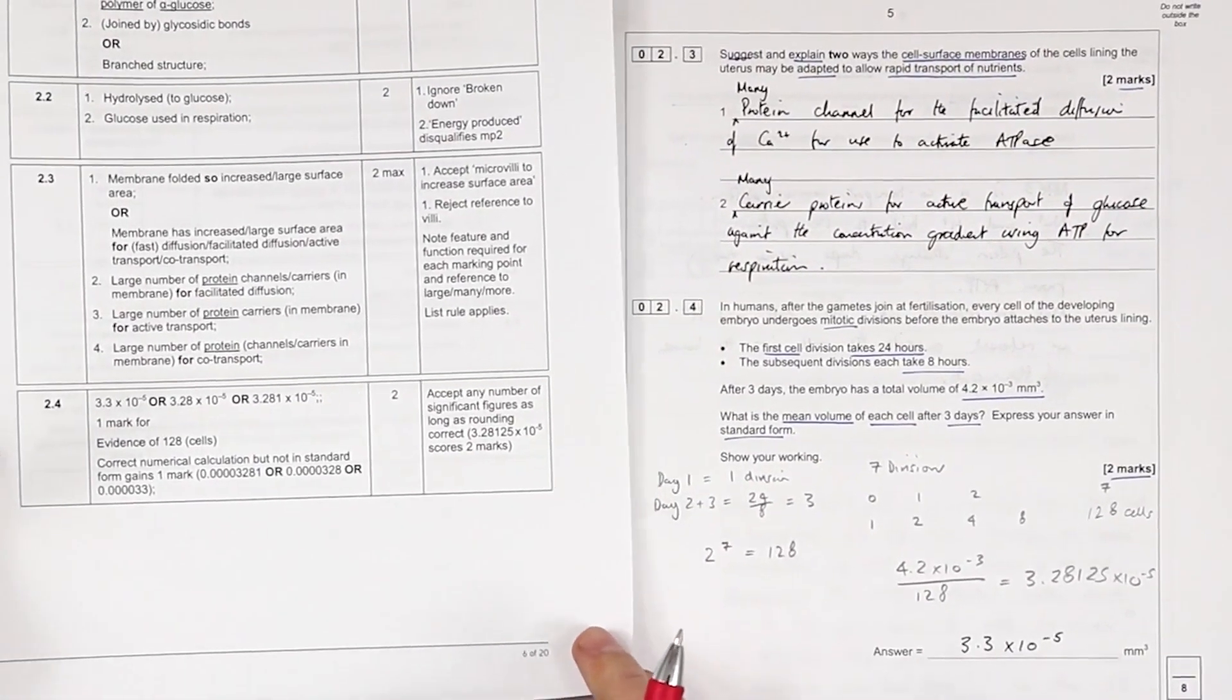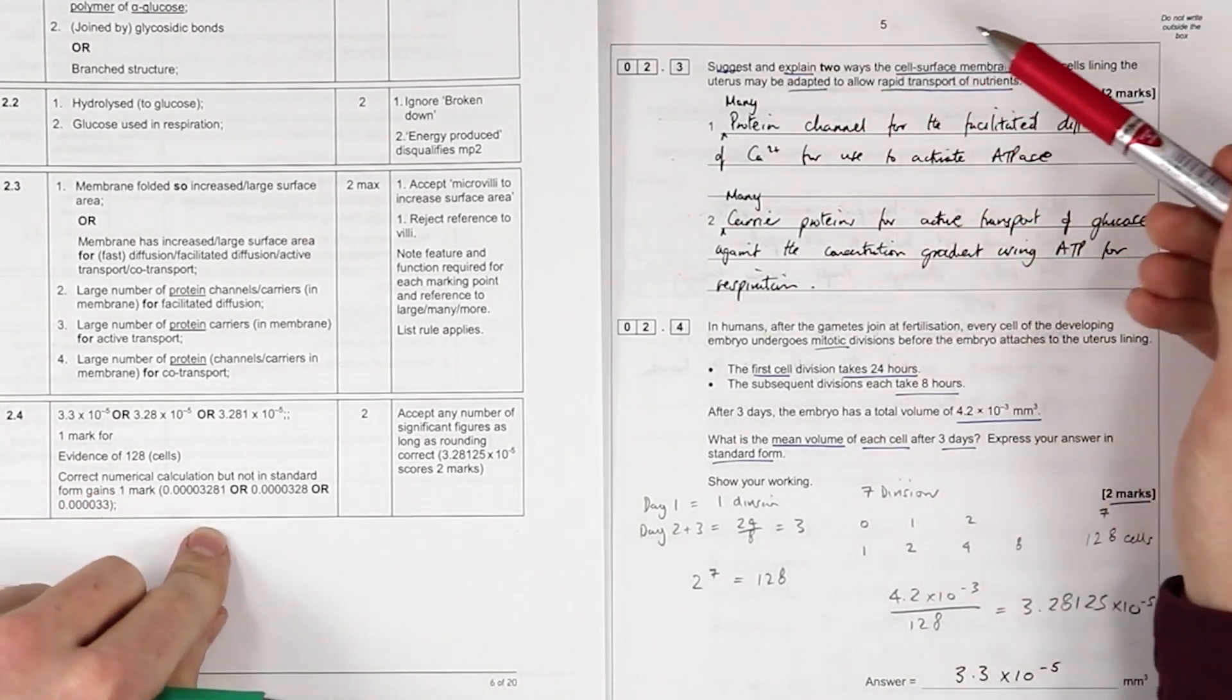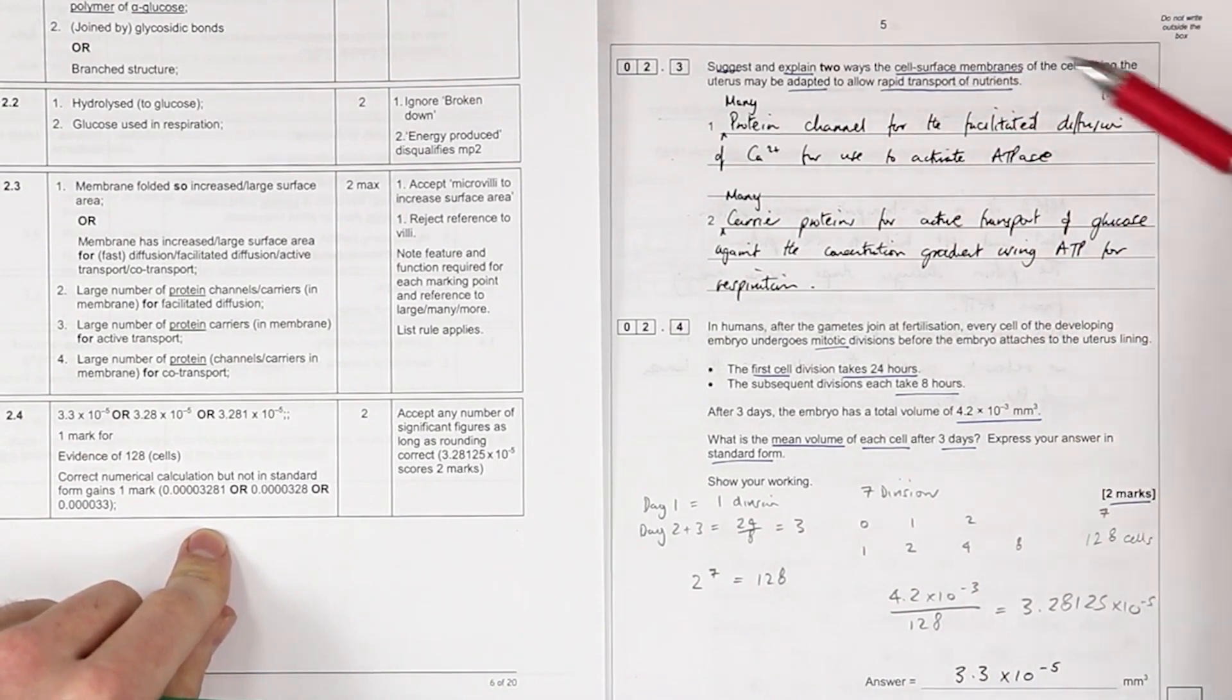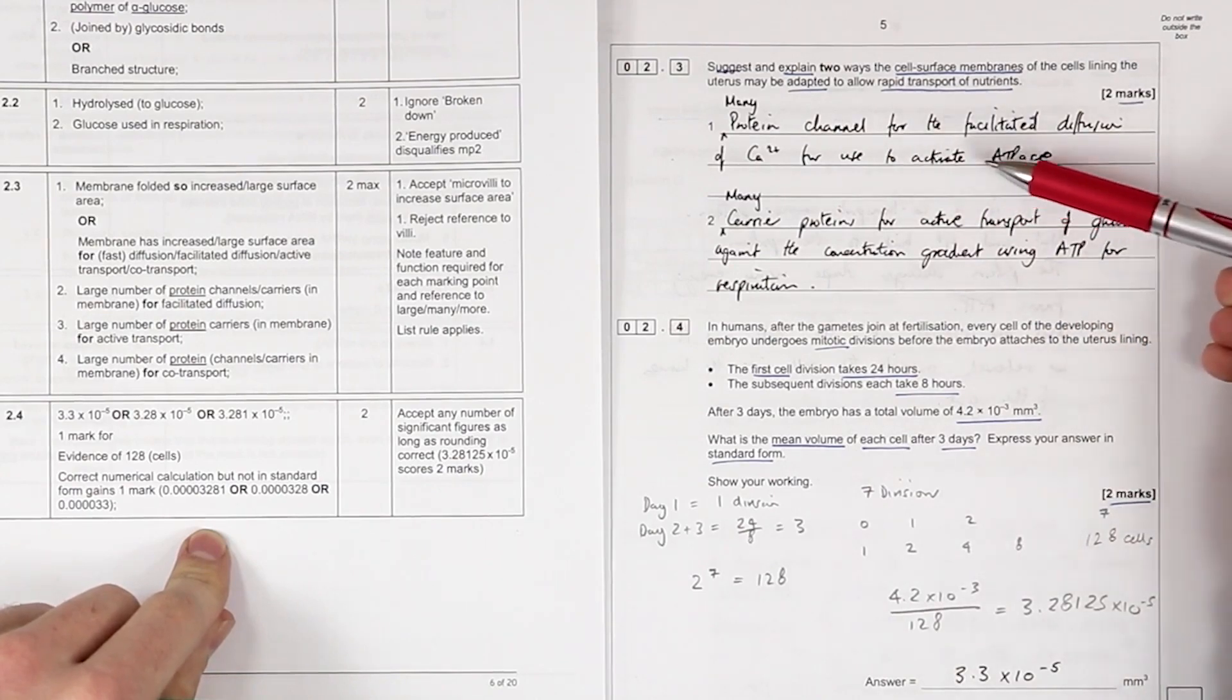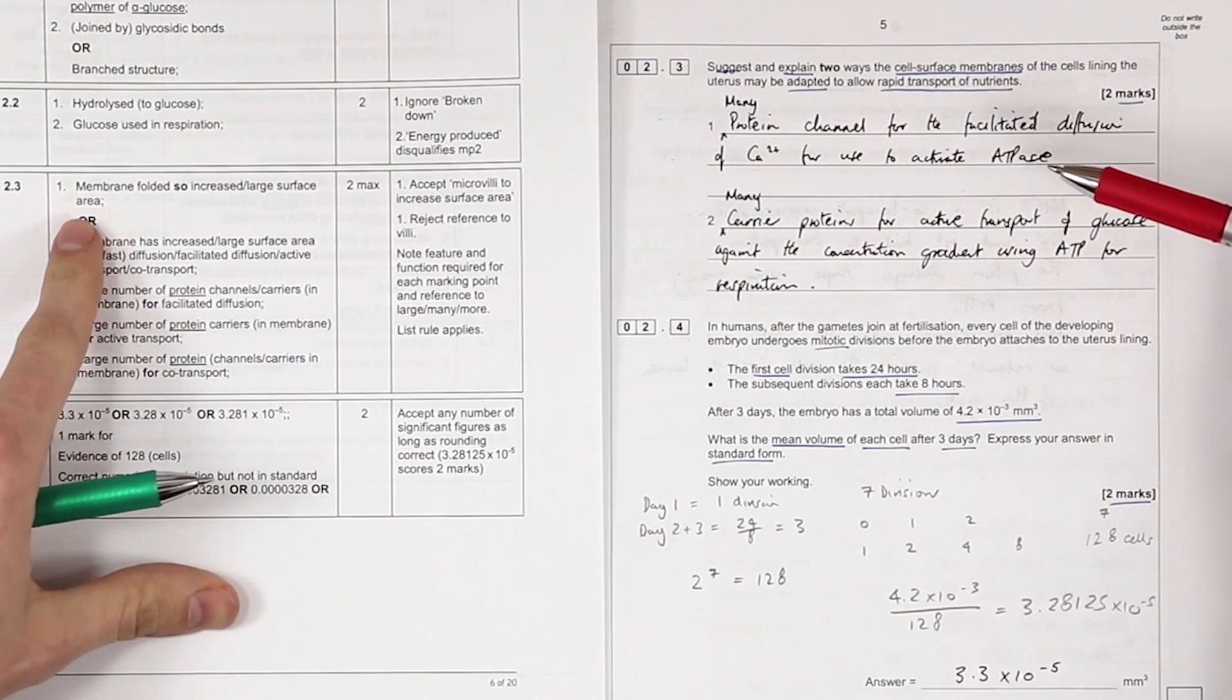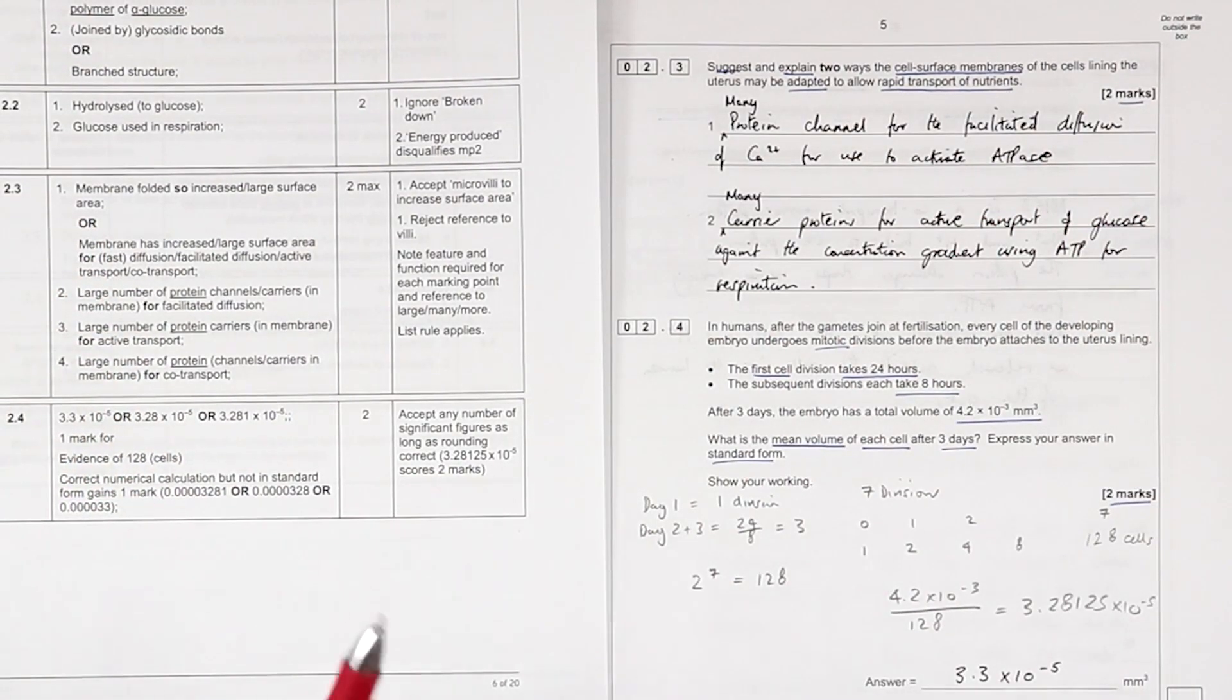Okay, 2.3: suggest and explain the way the sarcoplasmic membrane is adapted to allow rapid transport. Many protein channels for facilitated diffusion of calcium ions, for example for use to activate ATPase. Membrane is folded to increase the surface area—I could definitely have said that.